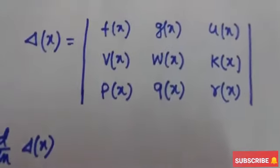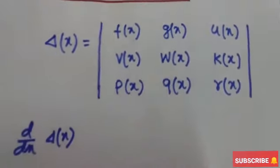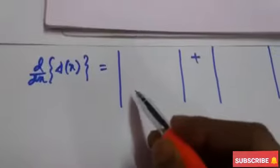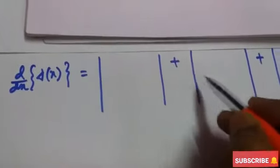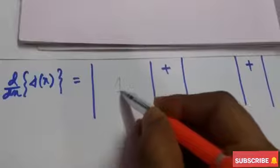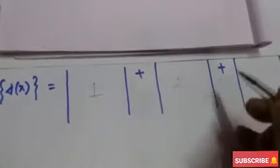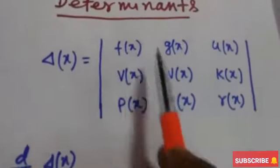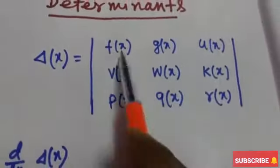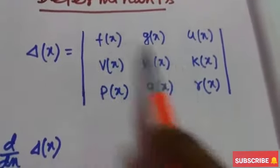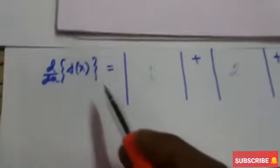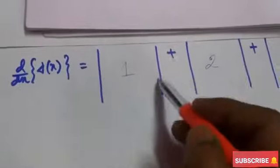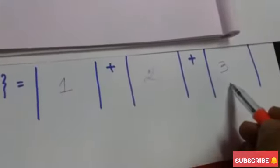To find out the derivative of a third order determinant, we have to draw 3 determinants: determinant number 1 plus determinant number 2 plus determinant number 3. Because it is a third order determinant — row and column is 3 by 3. That is why, to find out the differentiation of del(x), we draw the first plus second plus third determinant.